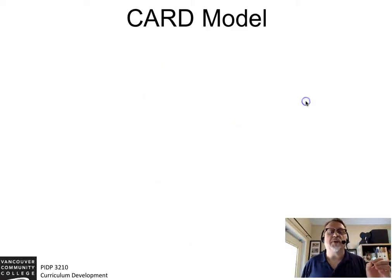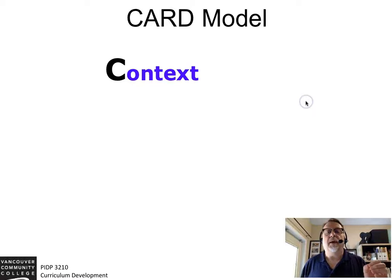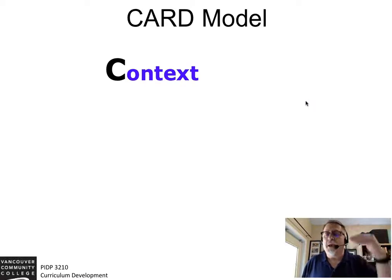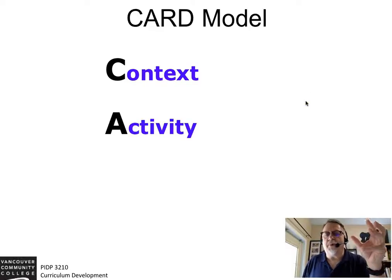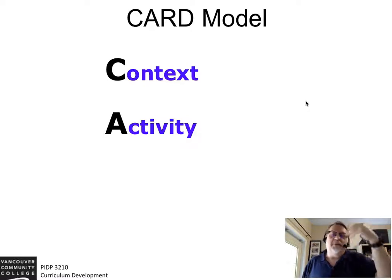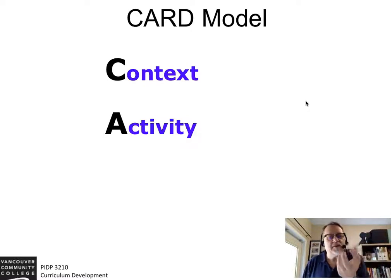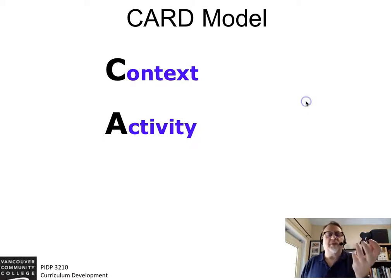The other method that we want to identify is referred to as the CARD method. It establishes four key components, but it also follows that seven-step process. The first thing is context — what is going to be happening? Then there's an activity used similarly to that hook, which requires a bit of active and dynamic learning.